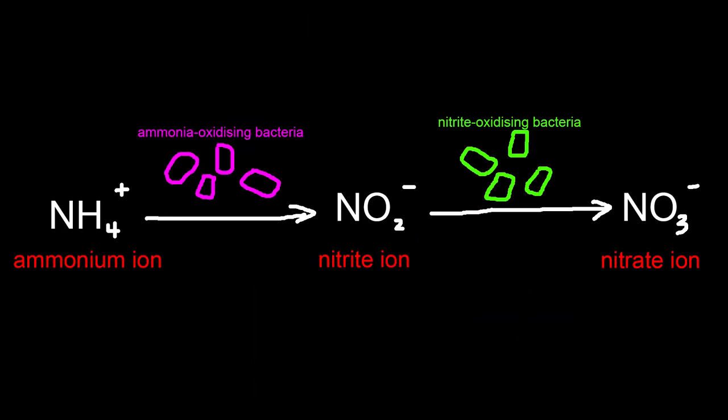I mentioned earlier that ammonium ions are released into the soil by certain nitrogen-fixing bacteria. Plain ammonium ions cannot be absorbed by plants directly, as it will kill them. Therefore we need to convert them into a less harmful nitrogen-containing substance in order to be absorbed. We can use even more bacteria to carry this out. Ammonia-oxidizing bacteria such as those belonging to the genus Nitrosomonas oxidize ammonium ions into nitrite ions, and then nitrite-oxidizing bacteria such as those belonging to the genus Nitrospira oxidize the nitrite ions produced into nitrate ions. Oxidation is essentially the loss of electrons to another species.